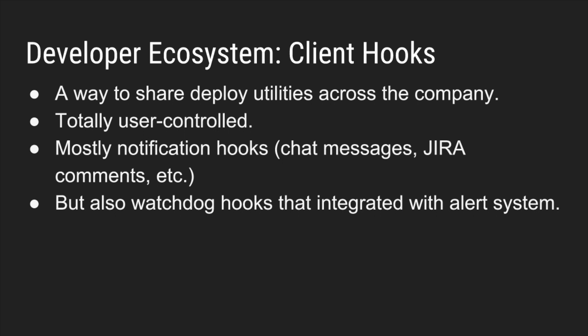Over time it became really important at Twitter that we had some way of sharing deploy utilities. It became increasingly obvious that every team running services on Aurora was creating the same tools and the same integrations with Twitter-specific infrastructure. So what we came up with is a thing called client hooks — essentially entry points that ran before and after commands in the Aurora client, bundled with the client and shared to every engineer at Twitter. These were totally user-controlled, mostly notification hooks: pinging the chat room saying 'this deploy just started' or 'this deploy just failed.'